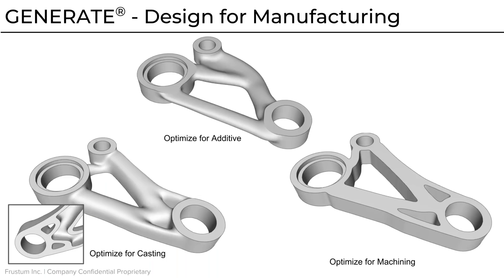Optimizing for manufacturing is very important. For additive, you're a little less constrained depending on whether it's a powder-based or resin-based build. Optimizing for casting, we can actually find parting lines — if you define the pull direction, we'll create a part that can be pulled out of a two-part mold. And optimizing for machining covers things like water jet cutters, 2D or 2.5D machining, or even five-axis machines where we can dictate extrusion directions to help out.